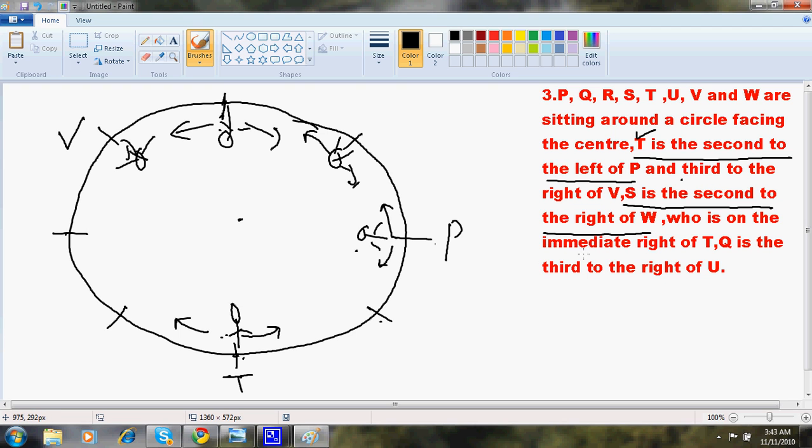Who is on the immediate right of T. Now this who basically means this W. Now W is on the immediate right of T. Here I go. There is T already in the figure and here is a T. So I'll say W is on the immediate right of T. So here is W. This is my right side. He is on my immediate right. I'll just go back. S is the second to the right of W.